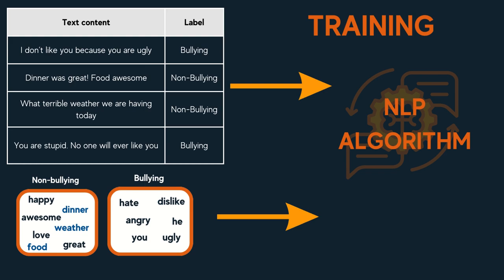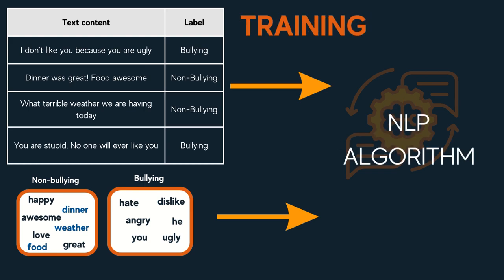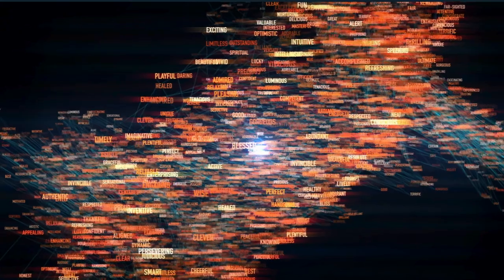The next process involves training the NLP algorithm based on our labels and features. This is done by providing the machine with lots and lots of text examples that include labels and feature data. AI algorithms typically use millions of data points to train for accuracy.